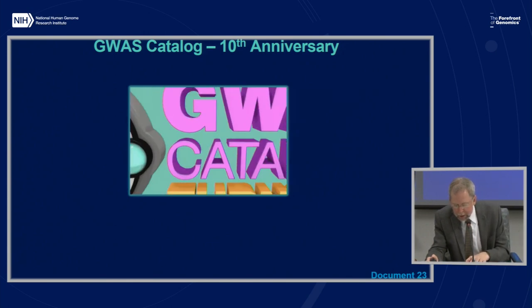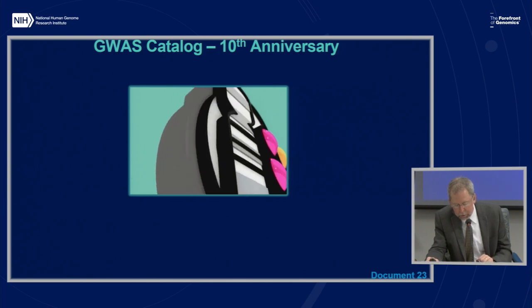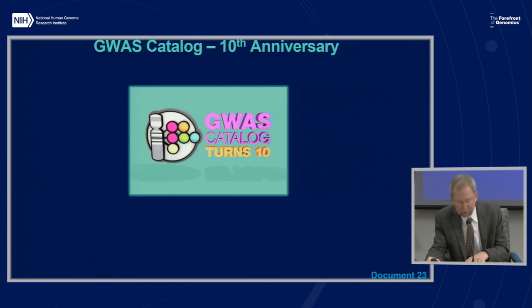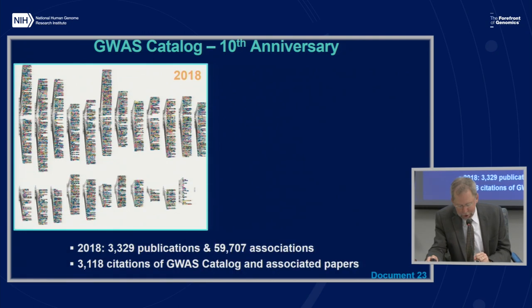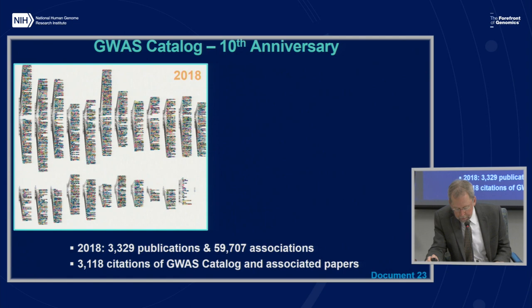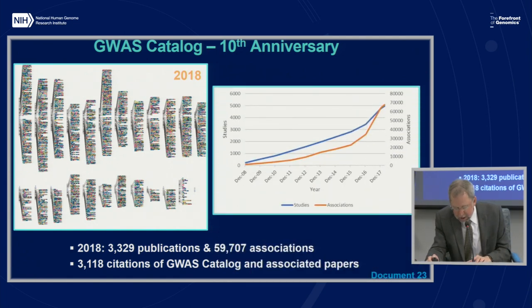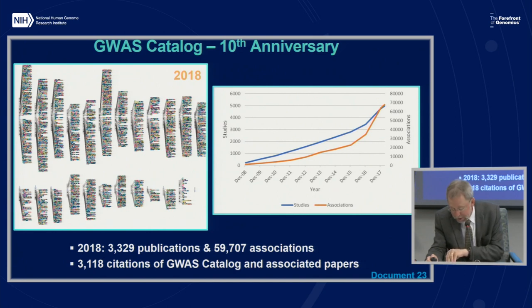The NHGRI-EBI Genome-Wide Association Studies, or GWAS Catalog, is an online resource providing curated results from GWAS-related papers. On April 28th of this year, the GWAS Catalog celebrated its 10th anniversary. Its iconic diagram launched in 2008 with a single GWAS finding related to age-related macular degeneration. Now, 10 years later, curators have added information about over 3,300 publications and over 59,000 associations, filling out the chromosomal map of the human genome. The catalog and its associated papers have been cited over 3,100 times in the literature. In honor of its 10th anniversary, the GWAS Catalog team has created a video time series available at the GWAS Catalog homepage.